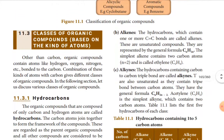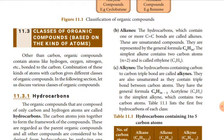Now we are moving to the next topic: 11.3 Classes of organic compounds based on the kind of atoms. Not only does carbon combine with carbon to form varying lengths and shapes of organic compounds — carbon also has the tendency to combine with hydrogen, oxygen, and nitrogen to give different classes of organic compounds. Other than carbon, organic compounds contain atoms like hydrogen, oxygen, nitrogen, etc., bonded to carbon. The combination of these kinds of atoms with carbon gives different classes of organic compounds.